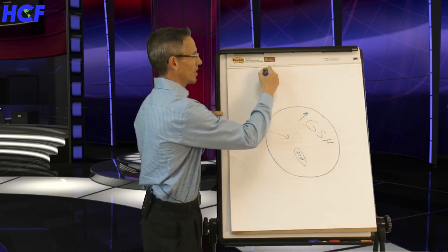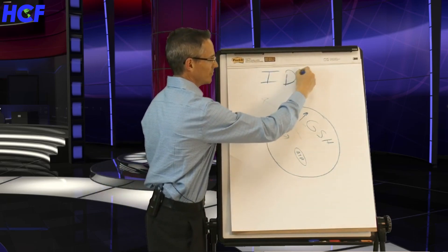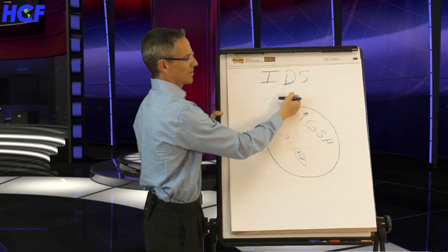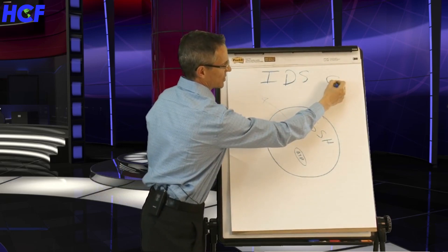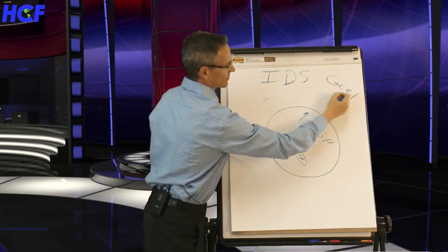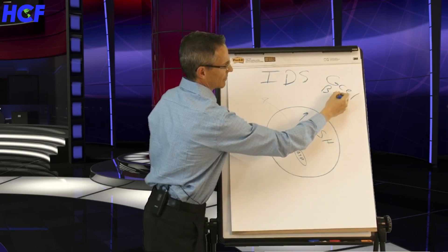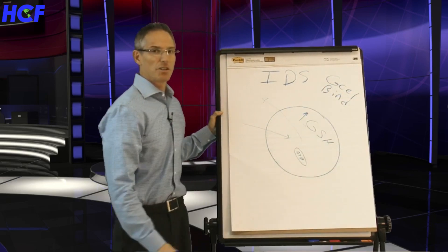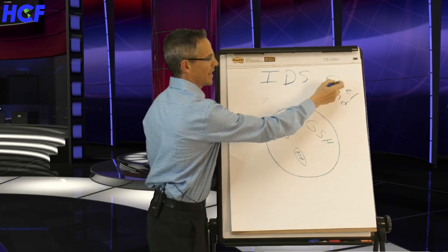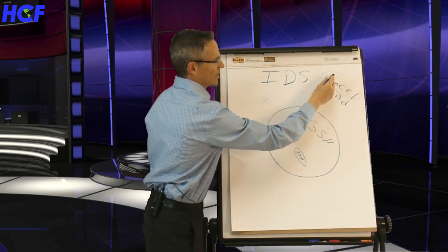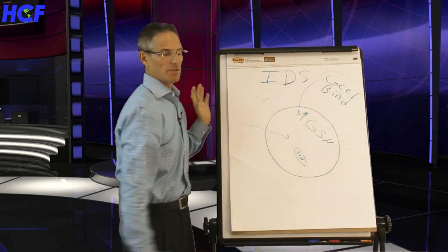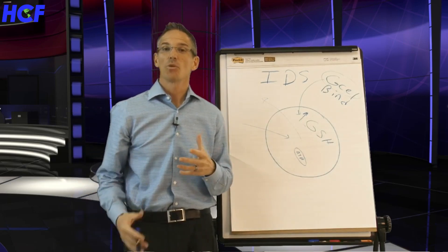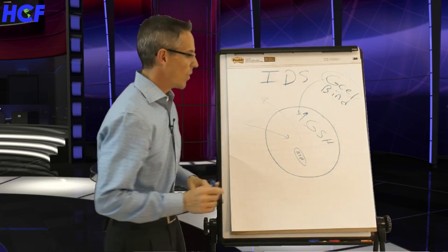Look, there's a product that we created called IDS, the intracellular detox system. It contains two products, G-Cell and a product called Bind. It's a two-part product, and you're going to understand this part in a minute. But G-Cell raises intracellular glutathione, and it does it by supporting many different pathways.